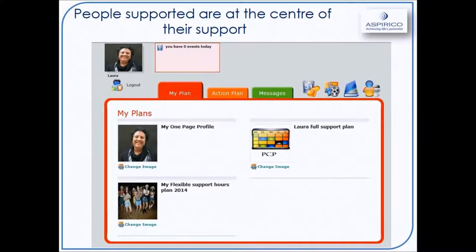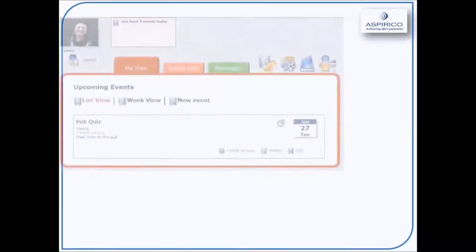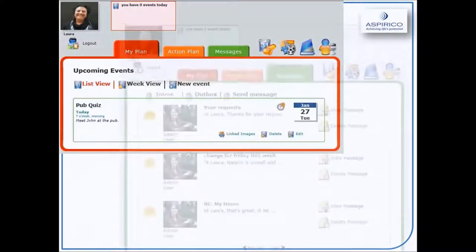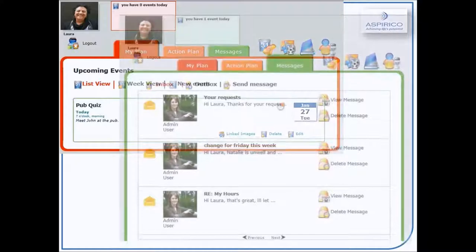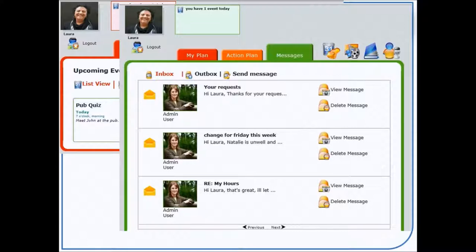Many organisations who use iPlanet attach images and video files to outcomes that have been achieved, or use images to make the person's calendar look more engaging by attaching a picture of their favourite activity that they may be taking part in daily, weekly or monthly. People supported can view and add to their calendar along with whoever else they have invited into their iPlanet. They can also use the message facility to contact their team, provider managers, or any other contact that they have in their iPlanet.